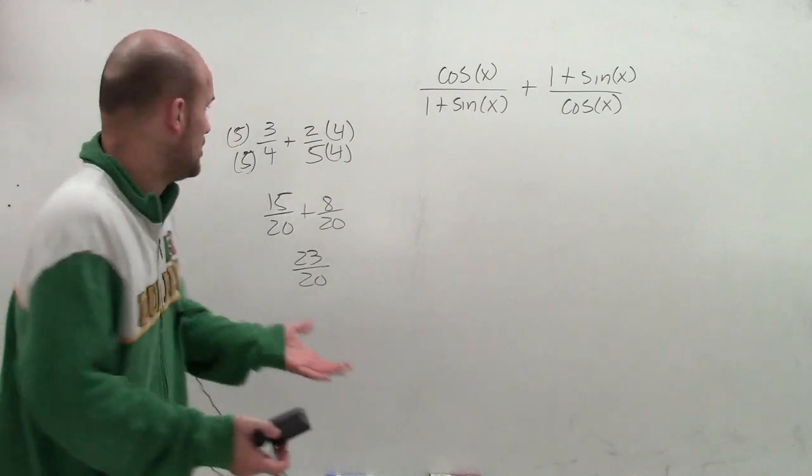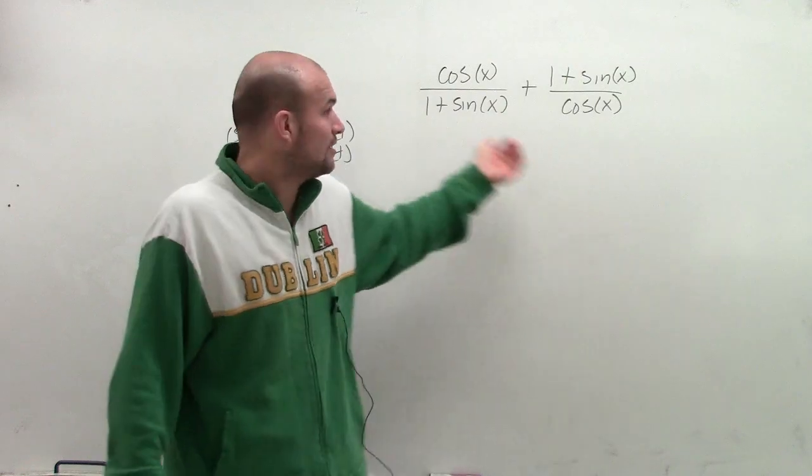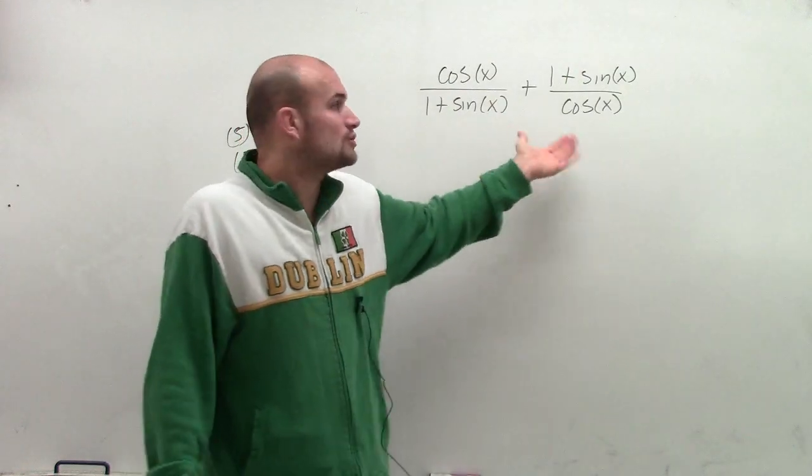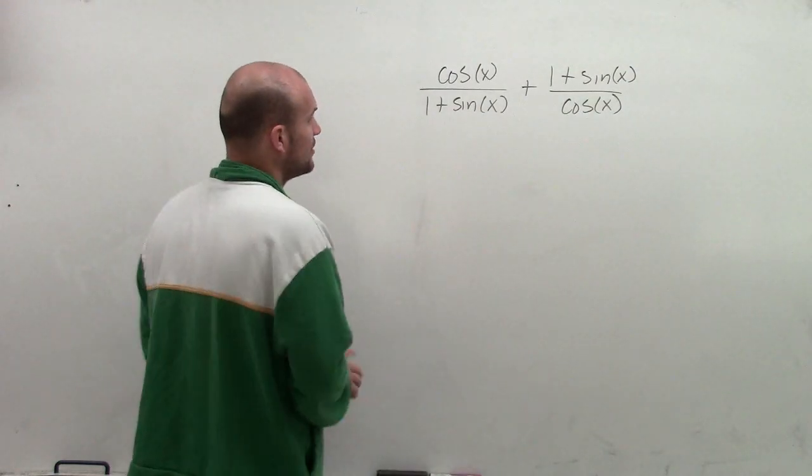That's not always going to provide the least common multiple when dealing with numbers, but it's a great way to always find a multiple when dealing with trigonometric terms. So that's exactly what I'm going to do. I'm just going to multiply by my other denominator on both sides.